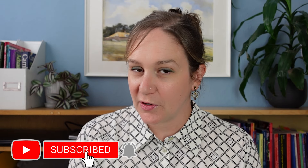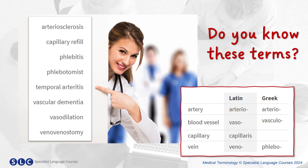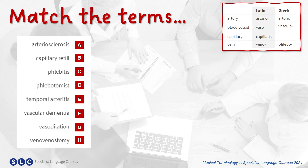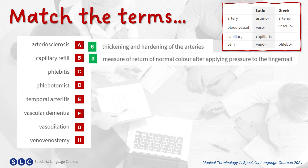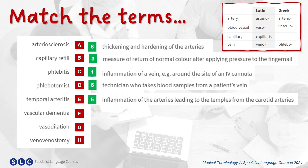So now let's take an even closer look at some medical terms for blood. Do you know these terms? Match the terms to the definition. And here are the answers. Arteriosclerosis is a thickening and hardening of the arteries. Capillary refill is the measure of return of normal colour after applying pressure to the fingernail. Phlebitis is inflammation of a vein. Phlebotomist is a technician who takes blood samples from a patient's vein. Temporal arteritis is inflammation of the arteries leading to the temples.